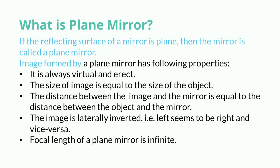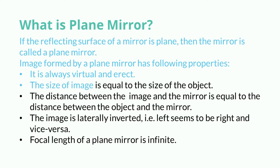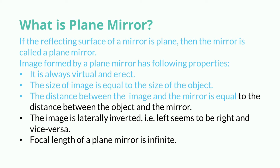The image formed by a Plane Mirror has the following properties. It is always virtual and erect. The size of the image is equal to the size of the object. The distance between the image and the mirror is equal to the distance between the object and the mirror.